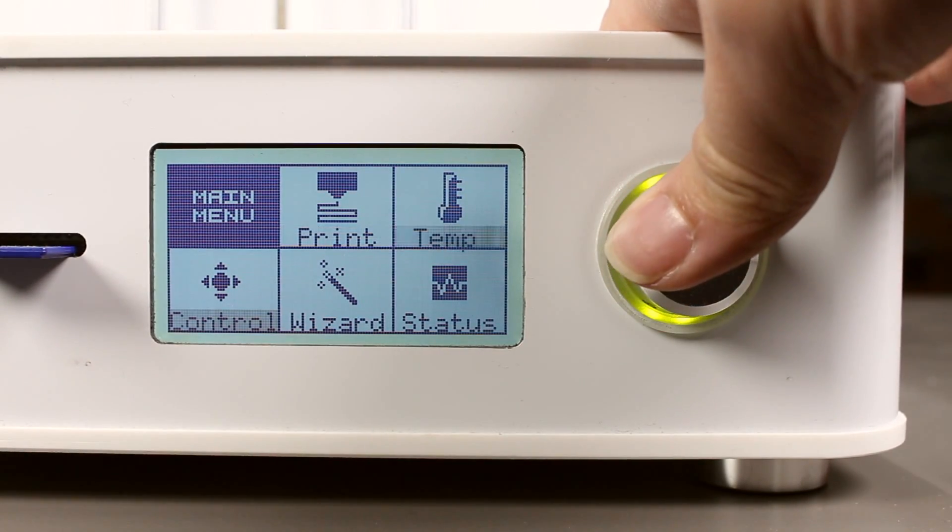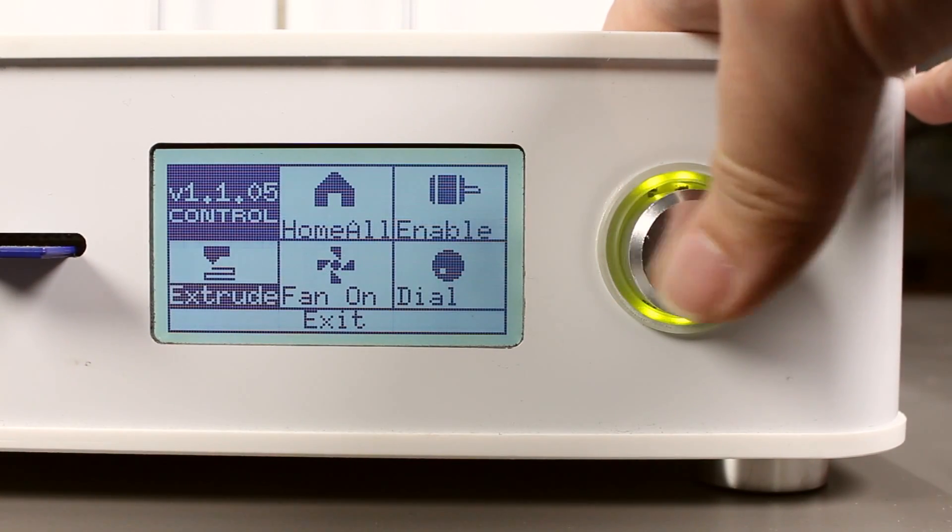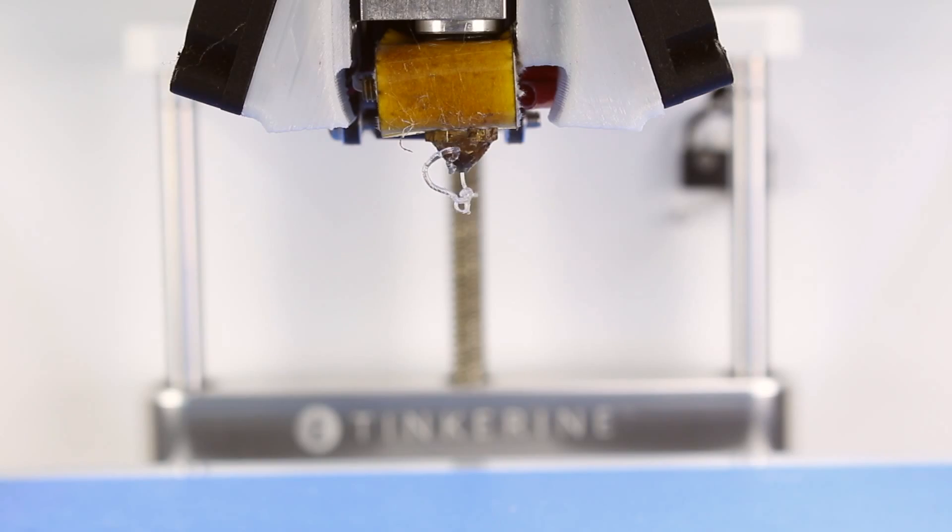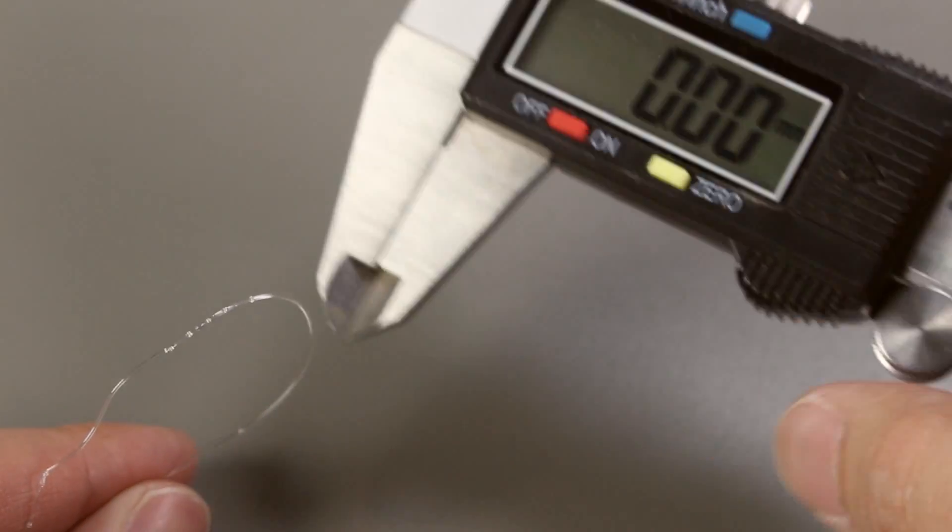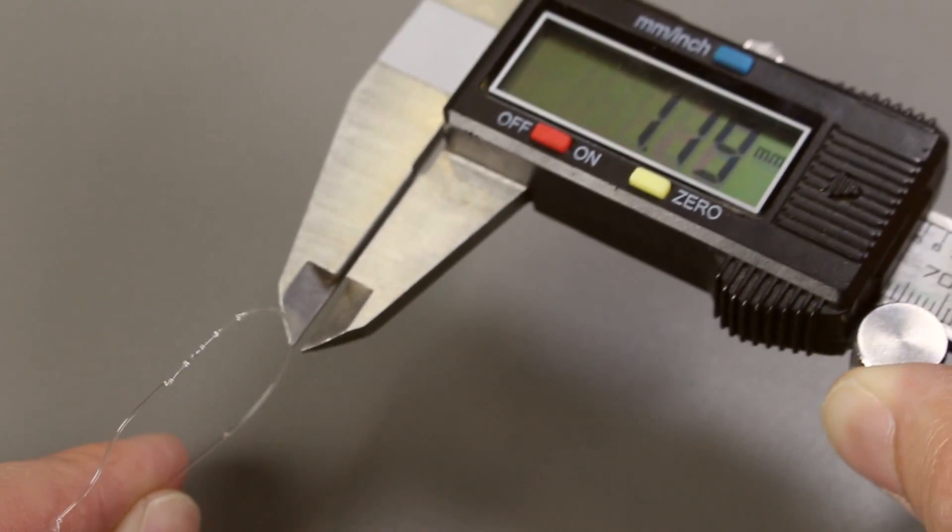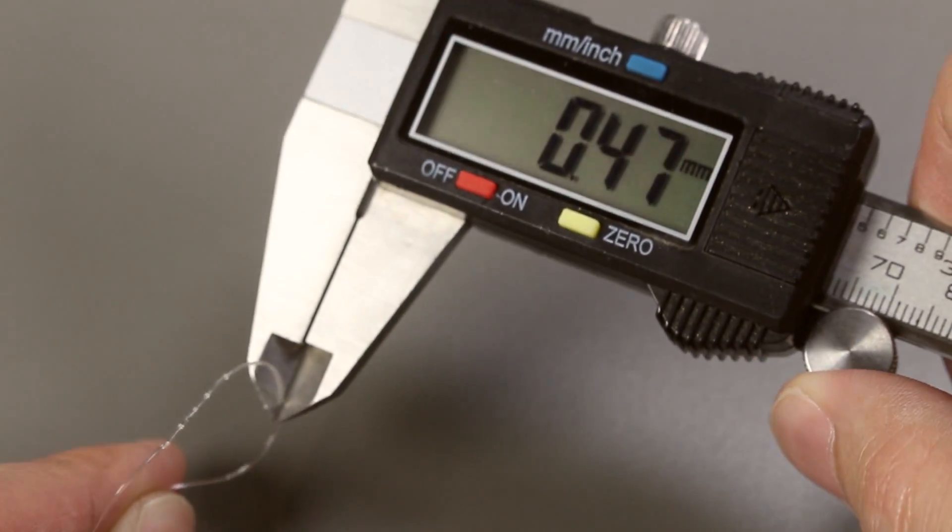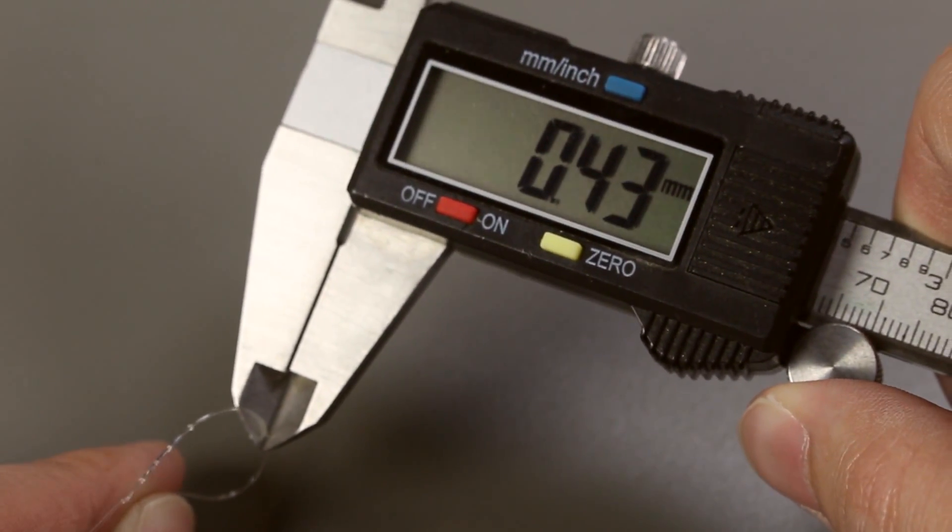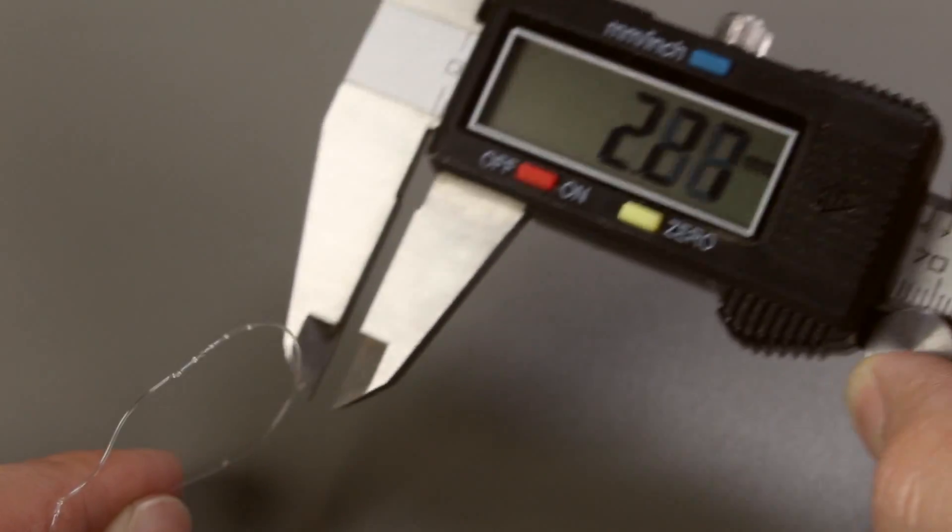Before we start testing the material, let's measure our nozzle diameter with our extrude wizard. The nozzle diameter is roughly 0.43 to 0.44mm.